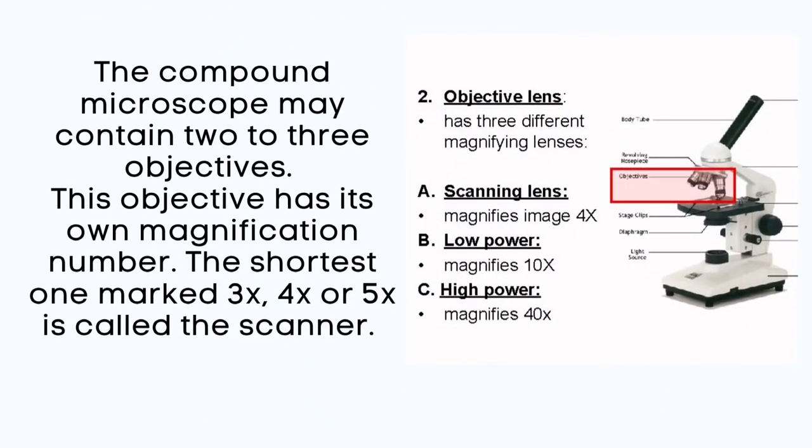The compound microscope may contain two to three objectives. This objective has its own magnification number. The shortest one marked 3x, 4x or 5x is called the scanner.